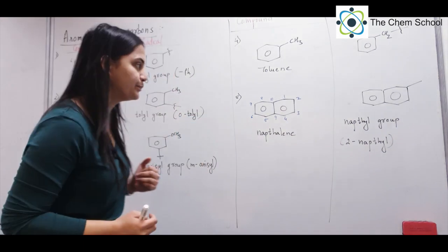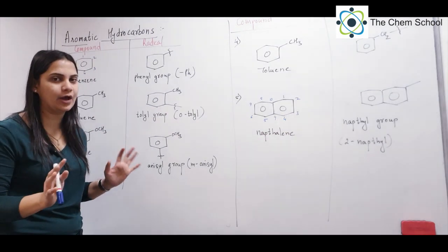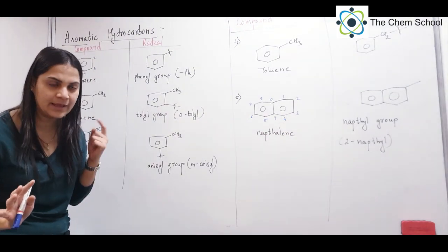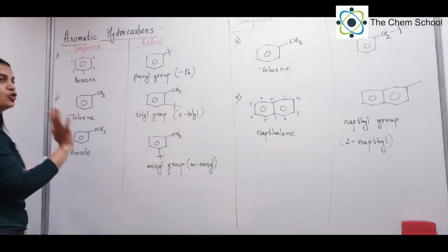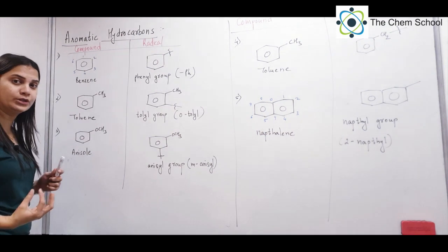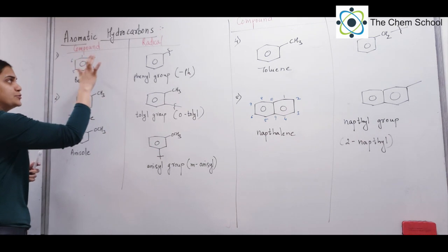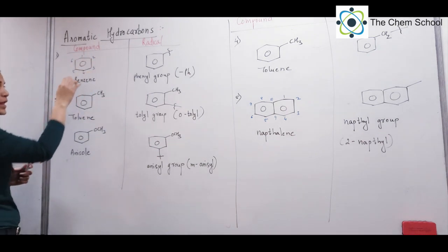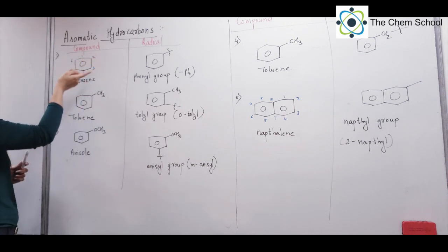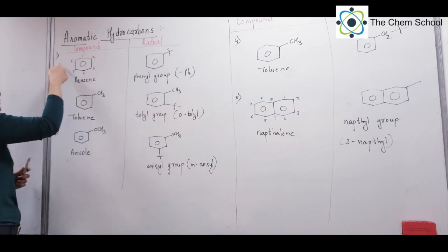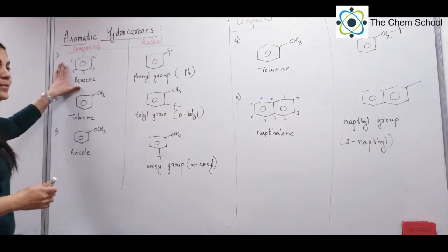Today we will cover aromatic hydrocarbons — meaning only carbon and hydrogen, no other functional groups. First, the simplest structure is benzene. Benzene numbering: you start from 1, 2, 3, 4, 5, 6. The side on which the substitution is present, you start numbering from that side, following the lowest numbering rule. So if there is no substitution, that is your benzene.